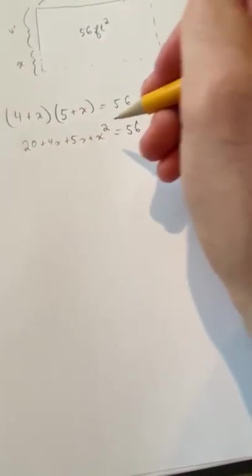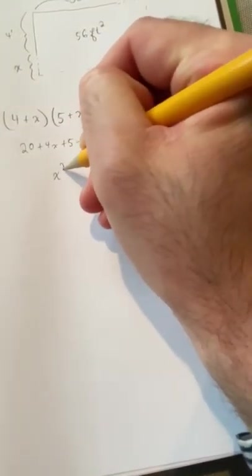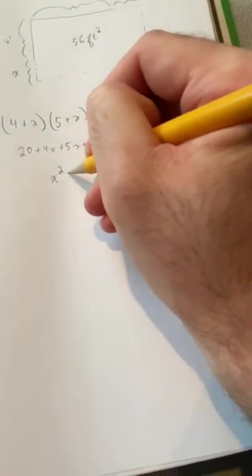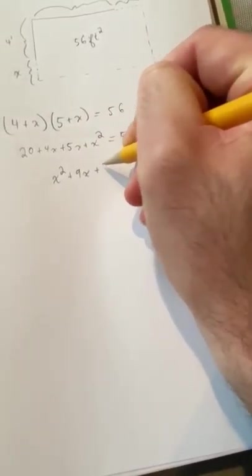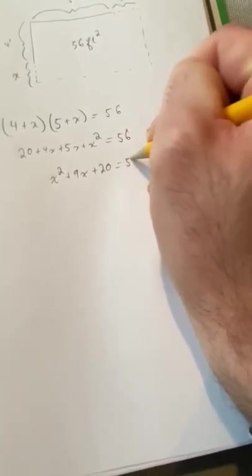And then we want to combine our like terms. So we have X squared plus 9X plus 20 equals 56.